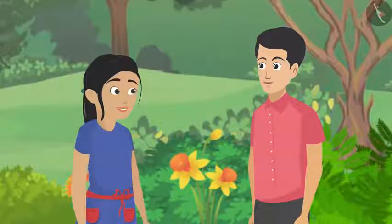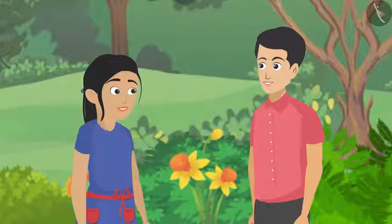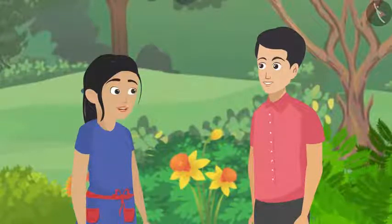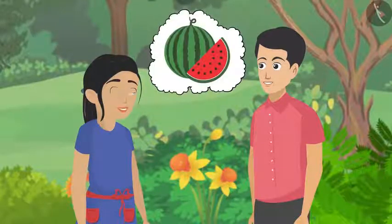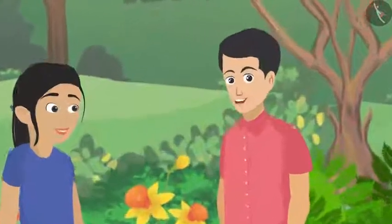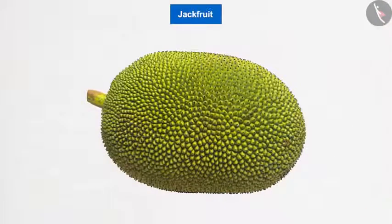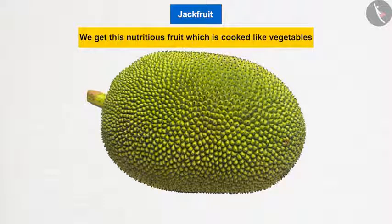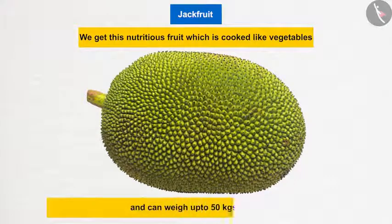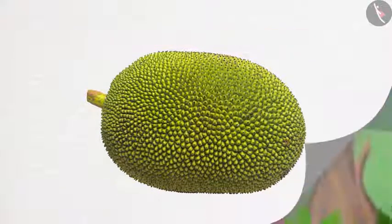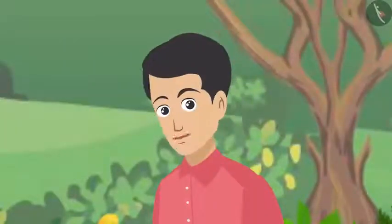Father asks which plant the largest fruit in the world grows on. Pankaj guesses watermelon, but the answer is jackfruit. Jackfruit is the largest of all fruits, hanging on the jack tree, and can weigh up to 50 kg!